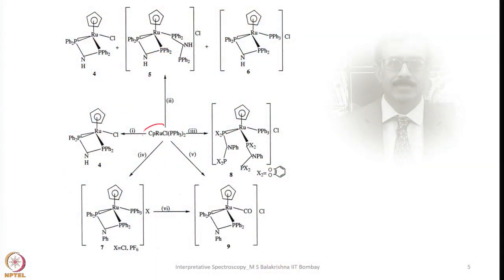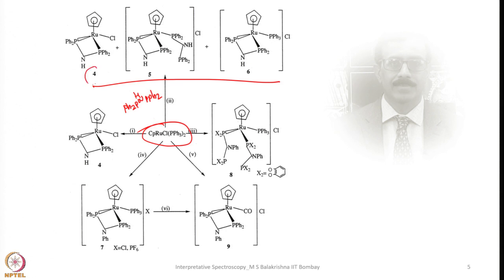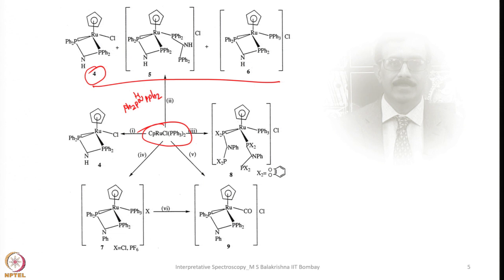For example, in this one, this ruthenium(2+) compound was treated with this bisphosphine. In the above reaction shown here, we are getting three products — 4, 5, and 6 — in a different stoichiometry. Although the reaction is carried out in a 1:1 ratio, the expected product is 4, but how the other two compounds are formed can be seen by simply looking into the 31P NMR spectrum of the reaction mixture.